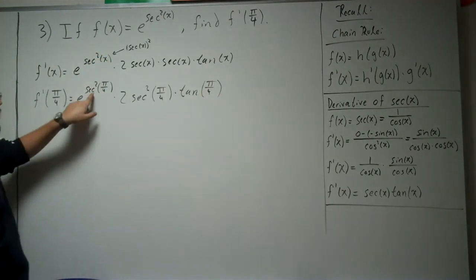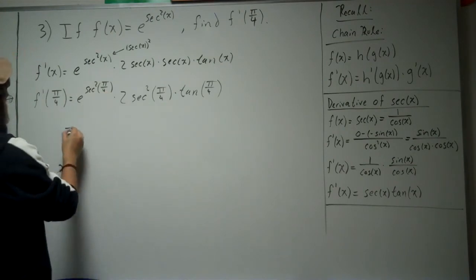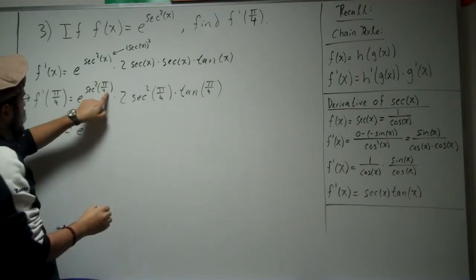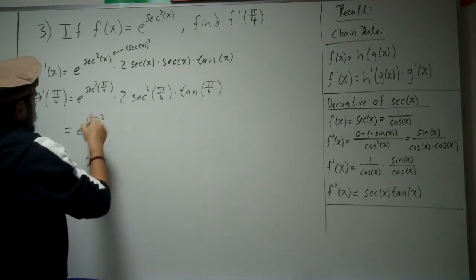times tangent of pi over 4. Alright, now, what's secant of pi over 4? Secant of pi over 4 is square root of 2. So that's e, and the square root of 2 squared, so let's just rewrite that. Square root of 2 squared. I'll do the rest down.